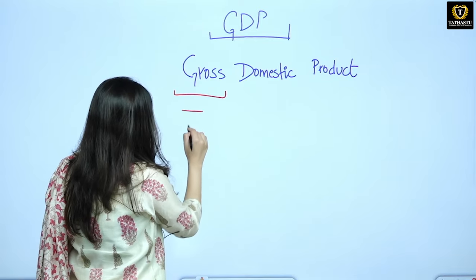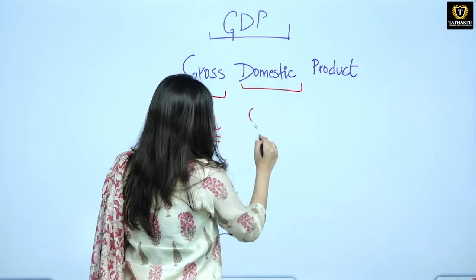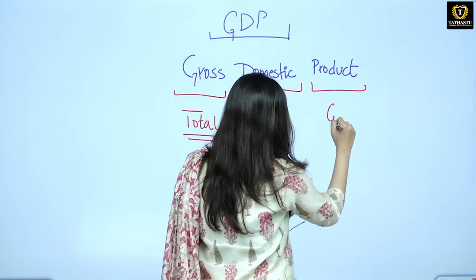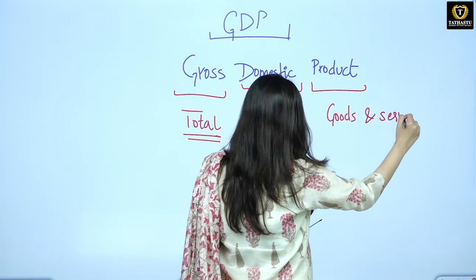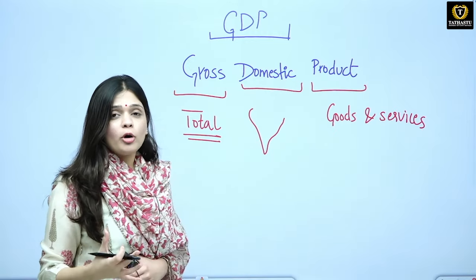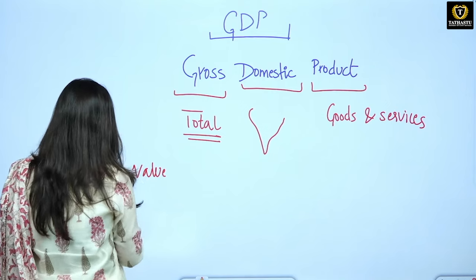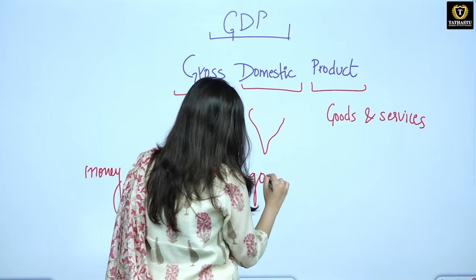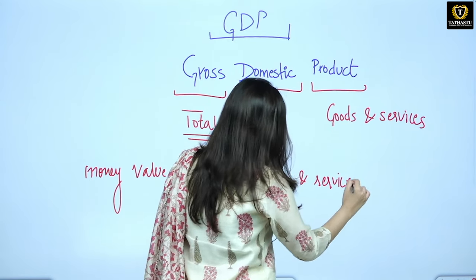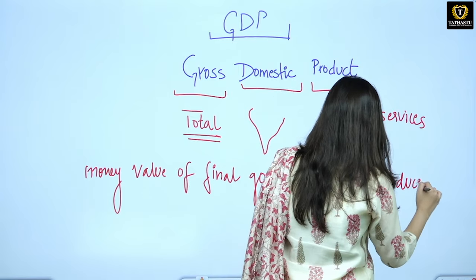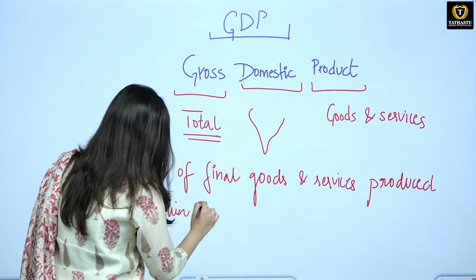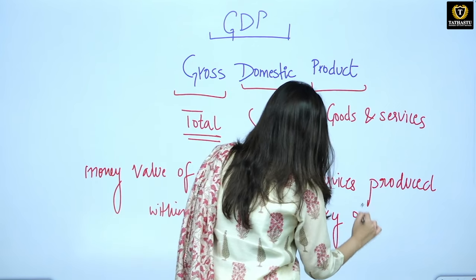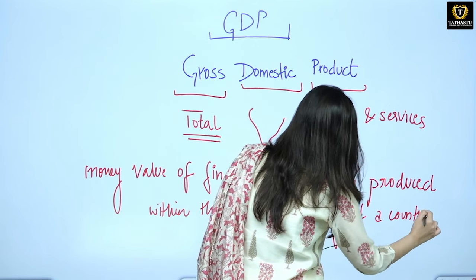When I say Gross, Gross means Total, Overall. Domestic means the geographical boundary of India plus 12 nautical miles. And Product means Goods and Services, both. GDP is the money value of final goods and services produced within the domestic territory of a country.